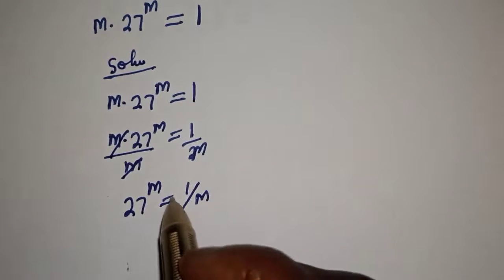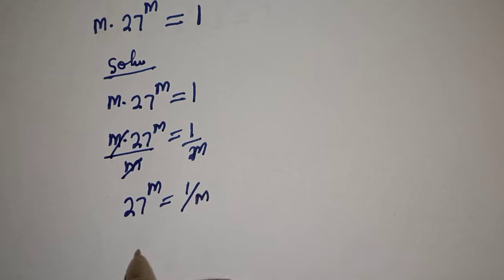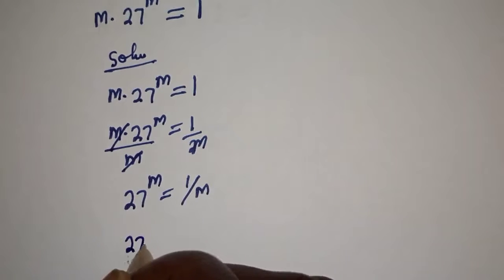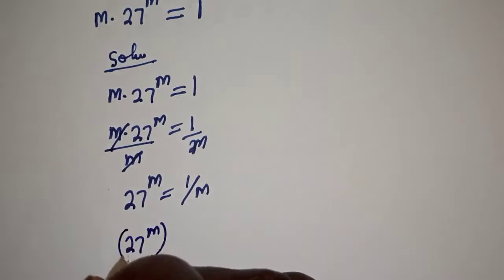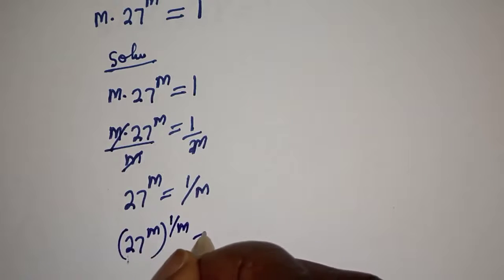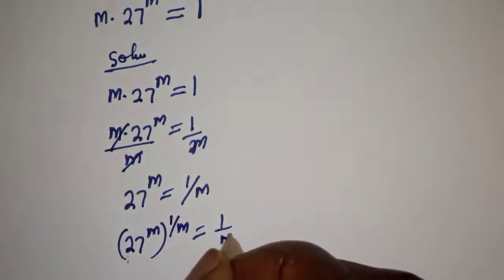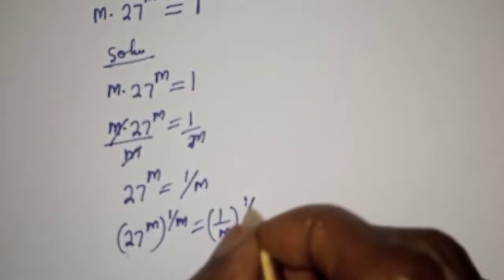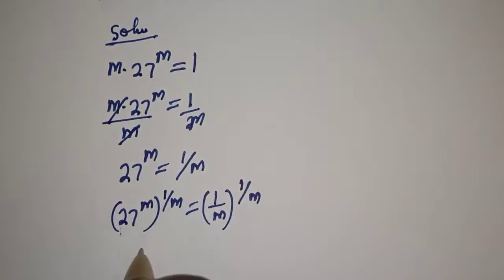Let's multiply the exponent of both sides by 1 over m. So 27 raised to power m, to the power of 1 over m, is equal to 1 over m to the power of 1 over m.